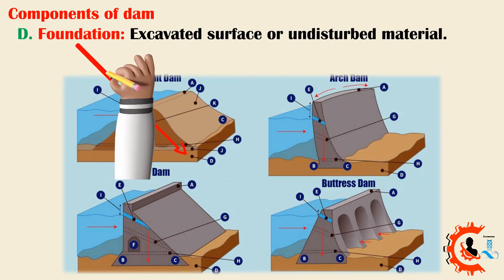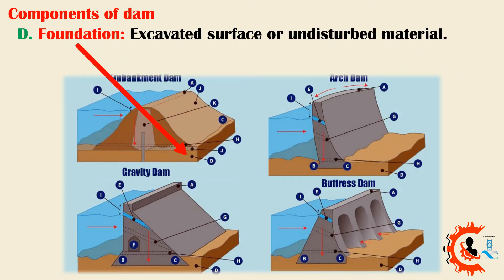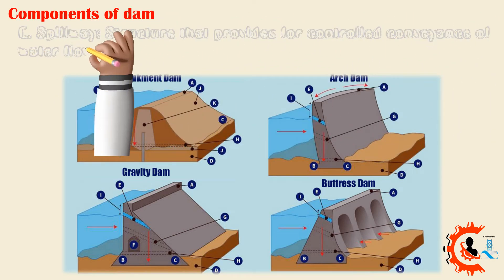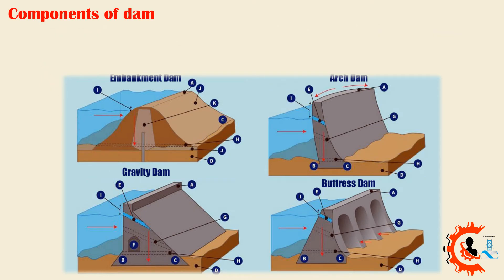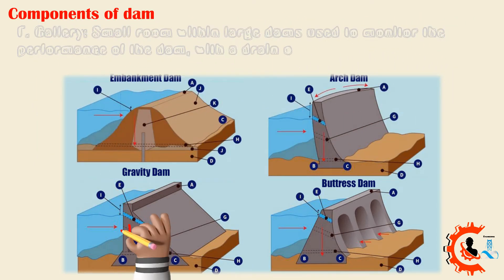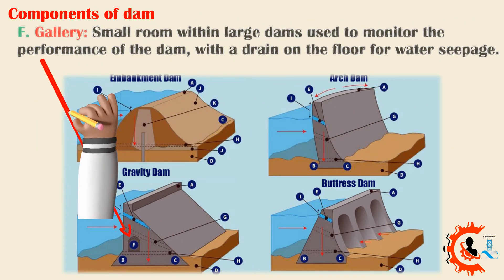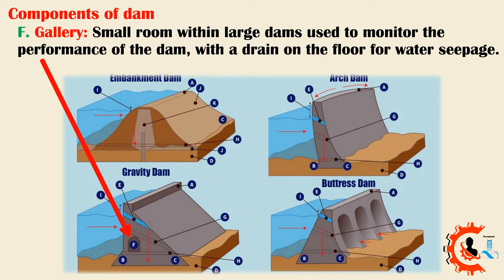D. Foundation — excavated surface or undisturbed. E. Spillway — structure that provides for controlled conveyance of water flows downstream of the dam. F. Gallery — small room within enlarged dams used to monitor the performance of the dam, with a drain on the floor for water seepage.